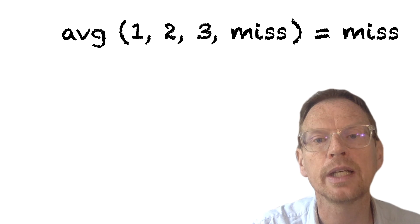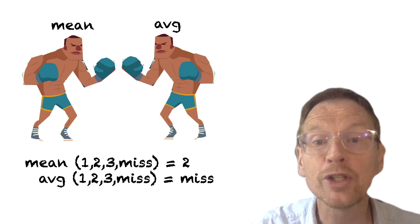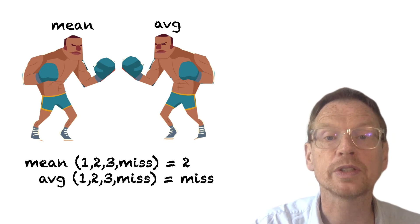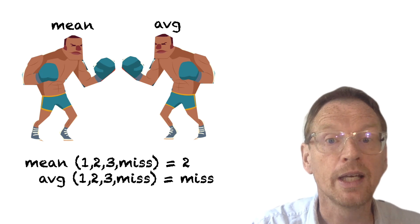Any missing numbers present will lead to the overall average being set to missing. The way I try to remember this difference: imagine two boxes, mean and average, having a bit of a fight — mean is bound to win because it's really mean, and so average decides to go missing. Now you know the difference between the mean and the average function in CDO; it's just a matter of how they treat missing values. If you have no missing values, the two answers will be the same. I hope you found that useful and I look forward to seeing you again soon on Climate Unboxed.